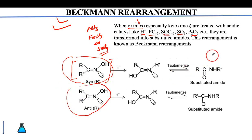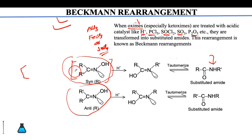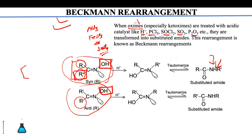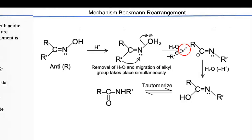In the Beckmann rearrangement, both oximes — whether syn or anti — will convert to an amide. The most important thing is that, unlike Baeyer–Villiger oxidation, the migration tendency here is not based on the type of group or the +I effect of the group, but mainly depends upon the group present anti to the OH. The group anti to the OH will migrate, irrespective of its migration tendency.